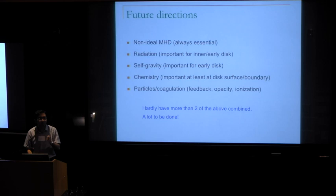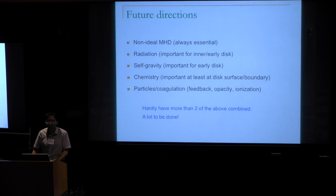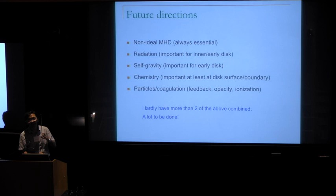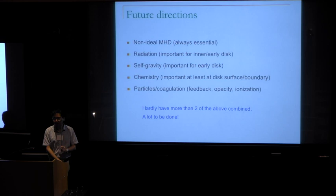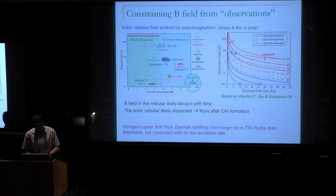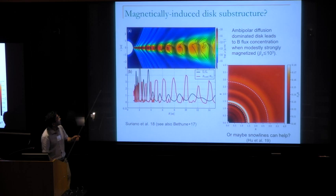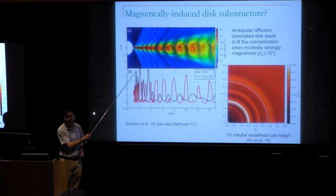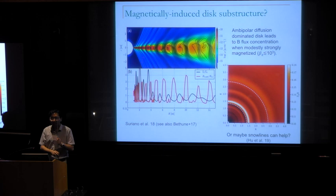Q&A: Jake asked how many simulations were 2D versus 3D, and whether anything would change in 3D. All the simulations shown are 2D. One concern is whether current sheets that form are stable in 3D, which needs examination. However, 3D simulations do exist — for the ring simulations, both Xiao's and Suriano's went to 3D; though resolution is limited, they find consistent results between 2D and 3D.